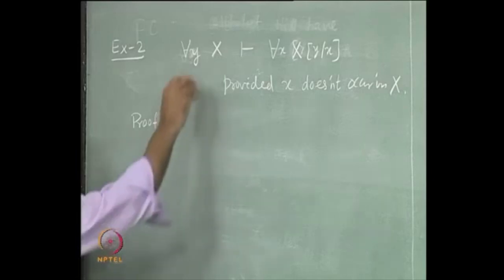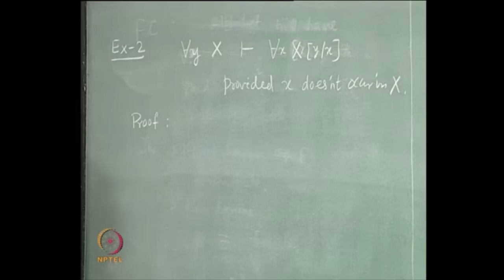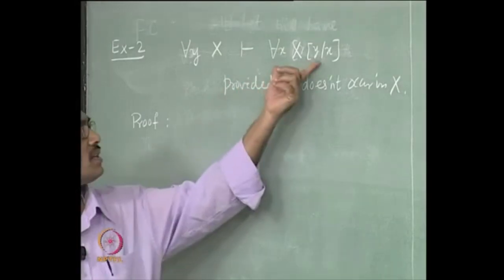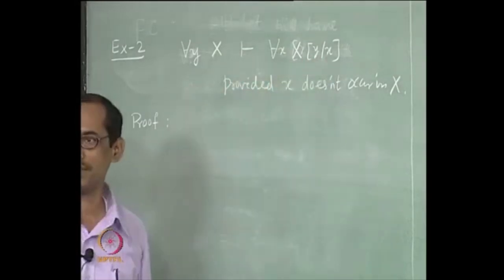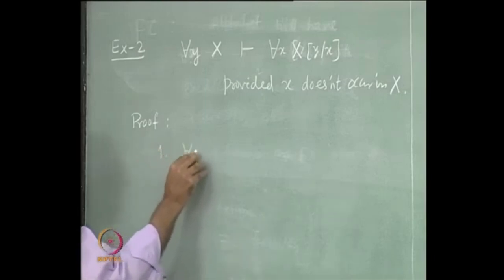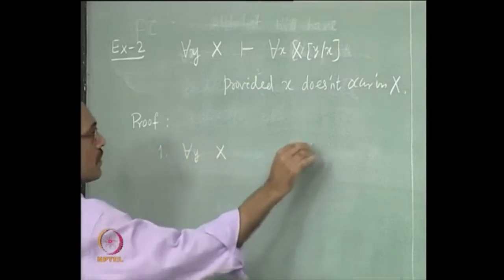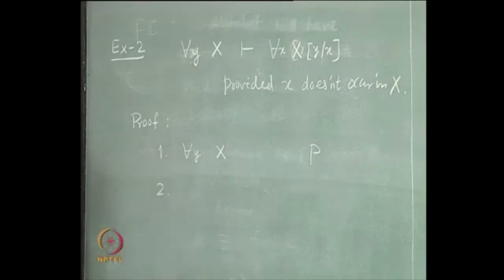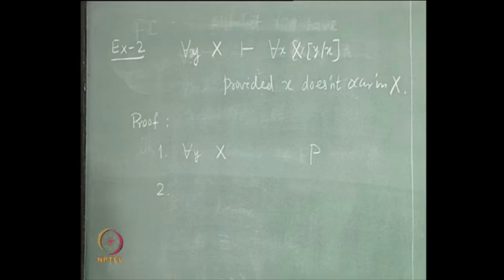Now we can use this as a premise. That is what it says. And then finally you should have for each x, X[y/x]. Let us write that as a premise first. Now, which one should we choose?